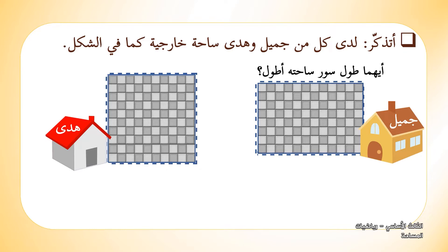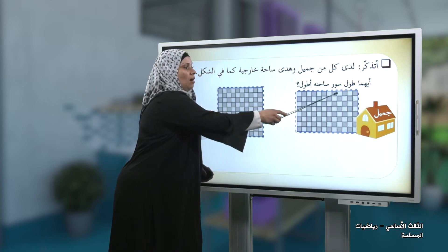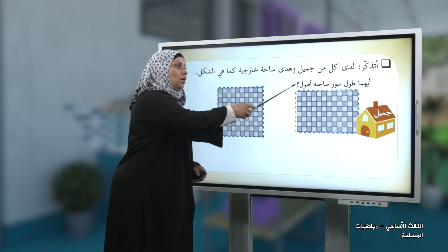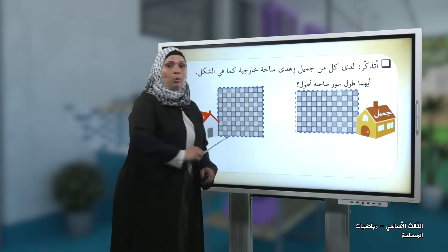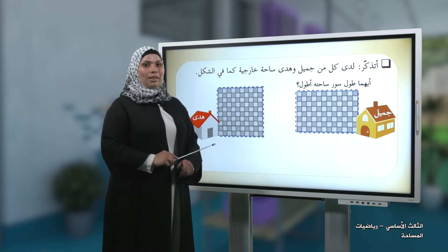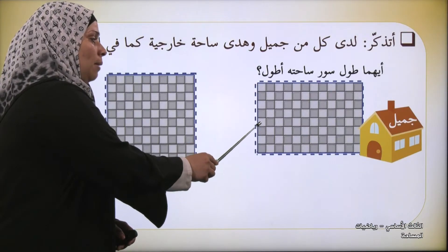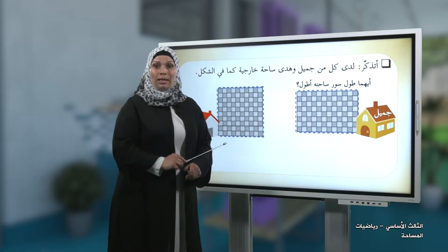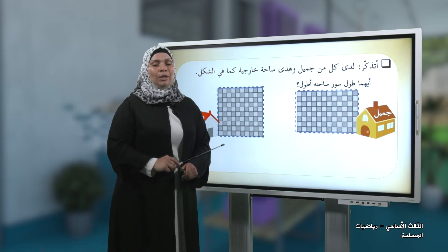هيا بنا نجد محيط ساحة جميل ومحيط ساحة هدى. نبدأ بعد الوحدات: واحد، اثنان، ثلاثة، أربعة، خمسة، ستة، سبعة، ثمانية، تسعة، عشرة، أحد عشر، اثنا عشر. والشكل مستطيل، إذن الضلع المقابل يساوي اثنا عشر أيضاً. ثم واحد، اثنان، ثلاثة، أربعة، خمسة، ستة، سبعة، ثمانية - والضلع المقابل ثمانية، لأن في المستطيل كل ضلعين متقابلين متساويين.